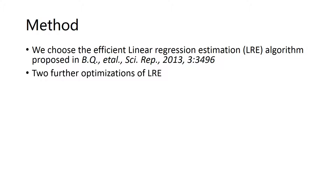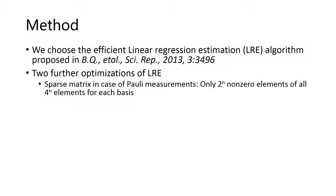Firstly, the measurement bases are sparse matrices in case of Pauli measurement. There are only 2^n non-zero elements of all 4^n elements for each basis.